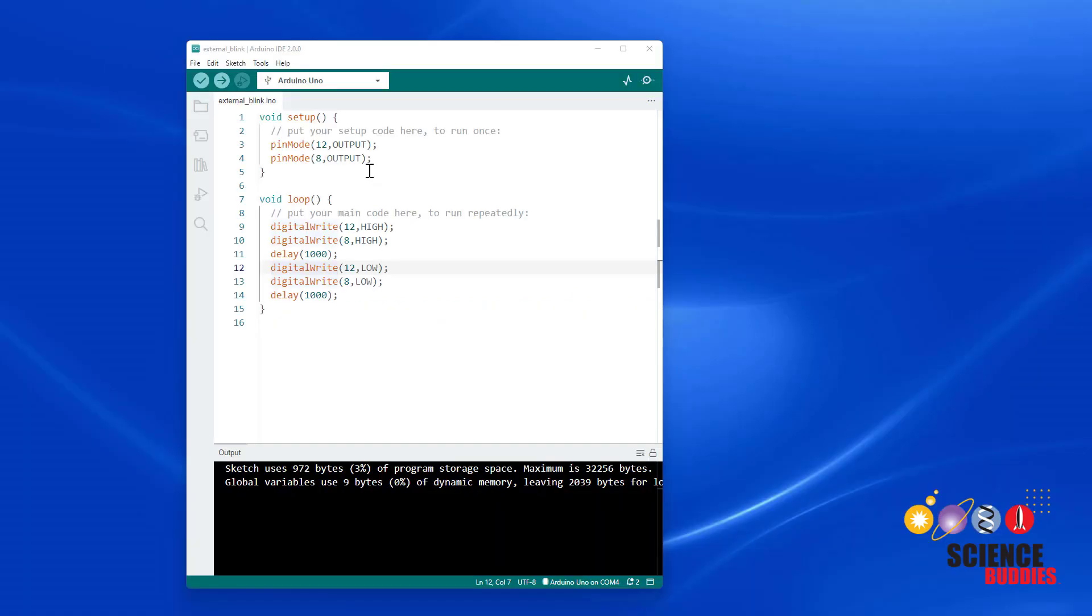If I want to change the program so the LEDs blink out of sync, I don't need to change much. I still need to set both of them as outputs. However, I don't want to set them both high initially. I want to set one of them high and set the other one low. Then, when I set the first LED low, I want to set the other one high. So all I had to do was change two of the highs and lows in the program.